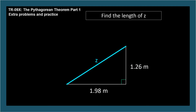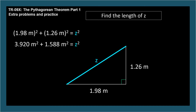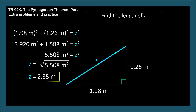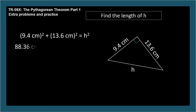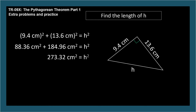Find the length of z. This is a right triangle, so it's okay to use the Pythagorean theorem: a² + b² = z². Square the lengths, add them, and take the square root. h equals 16.5 meters.